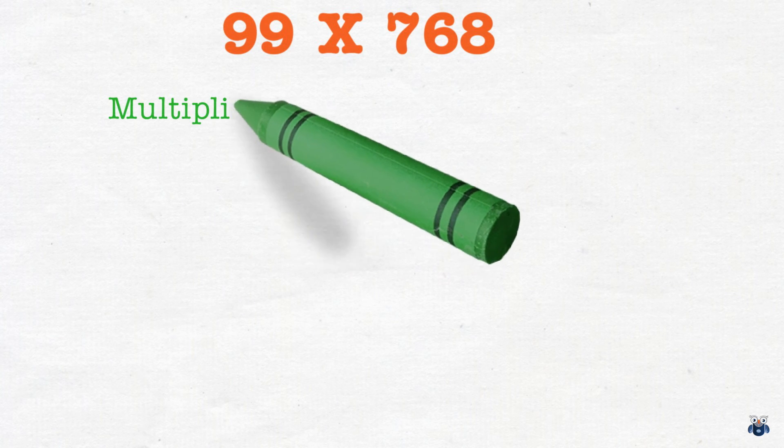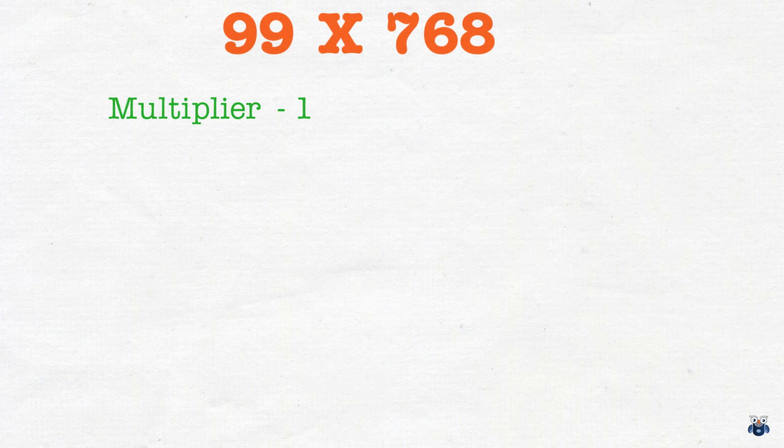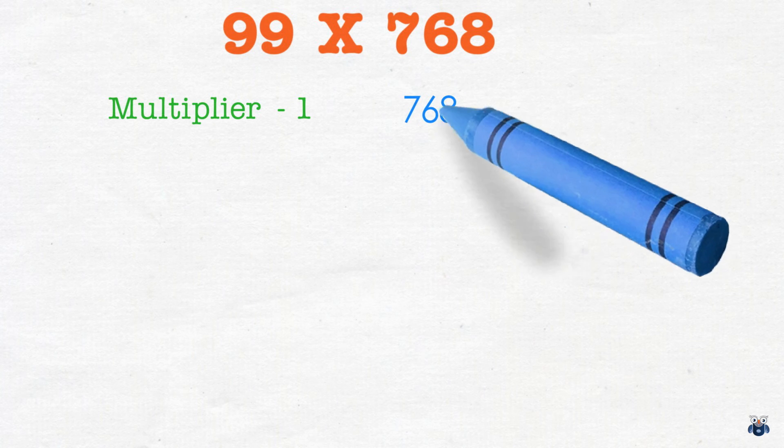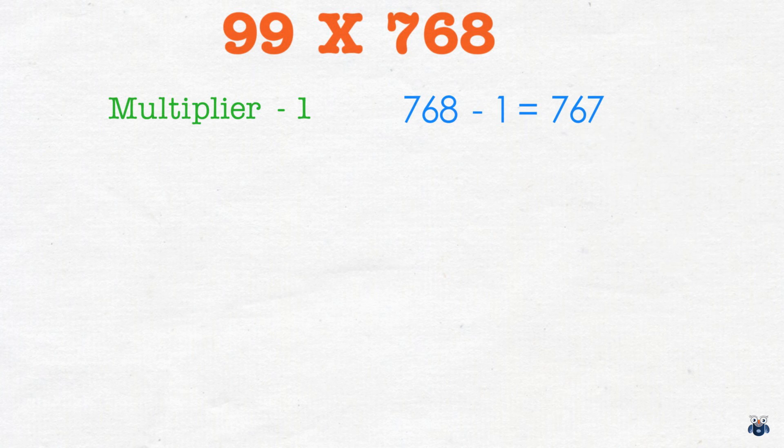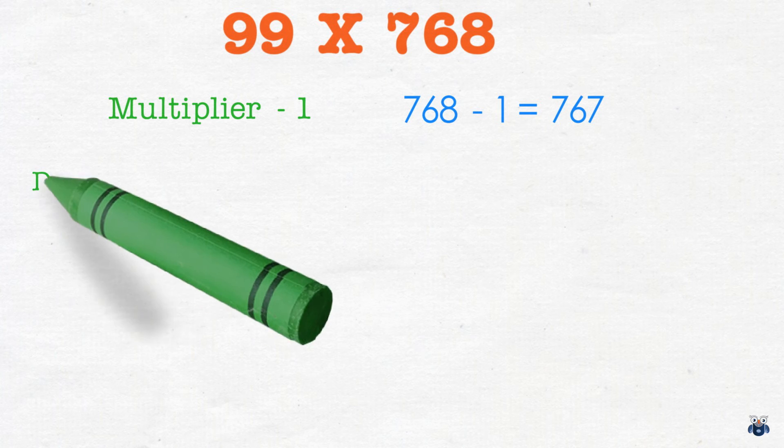Let's now look at our third scenario. Does our method apply to this exercise where the number of 9's is fewer? 99 times 768. As before let's apply our pattern to this problem. We reduce the multiplier by 1. 768 minus 1 is 767.